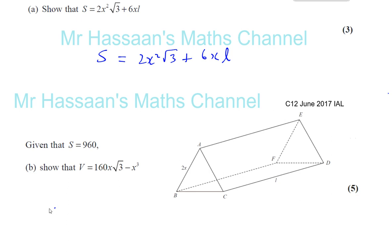So now what we can say is that S is equal to 960, so 2 times x squared times root 3 plus 6xl is equal to 960. Now we want to find the volume, and the expression for the volume. Now the volume is the area of the cross section times the length.